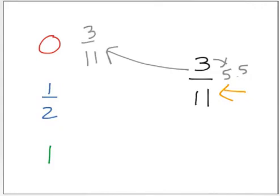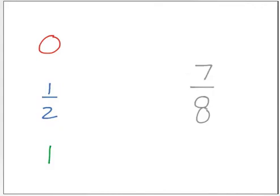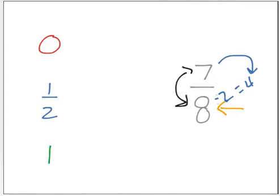It's close to 0. Now take this fraction, 7 eighths. Again, I start by looking at the denominator. The denominator is 8. I'm looking at the number up above, and I'm thinking: what is half of 8? Well, 8 divided by 2 is 4. 7 is more than 4, so I know this fraction is more than half. I also noticed that 7 and 8 are very, very close to each other. If they're only one away, then that's almost the whole thing. So the fraction 7 eighths is almost 1.